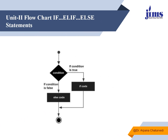In the flowchart for `if-else`, the flow arrives at a condition. If the condition returns true, the if-block code executes; if it returns false, the else-block code executes. Once out of the `if-else` block, normal statements written outside are executed sequentially.